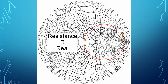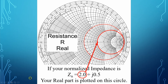The next thing to notice is the resistive portion. Notice we have little circles all grounded to one side. These circles emanate around and around and get bigger and bigger. This is where you plot your resistive portion of your impedance. With our example, if the normalized impedance Z-sub-n equals 2.0 plus J0.5, then this 2.0 portion — the real or resistive portion — would be plotted on this circle right here.